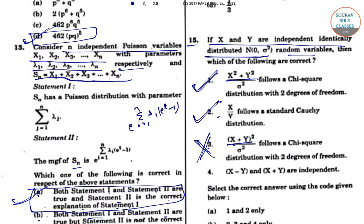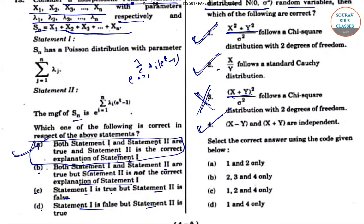Statement 4: (X - Y) and (X + Y) are independent. This is again correct. So option C, that is 1, 2, and 4 only, is the correct answer.